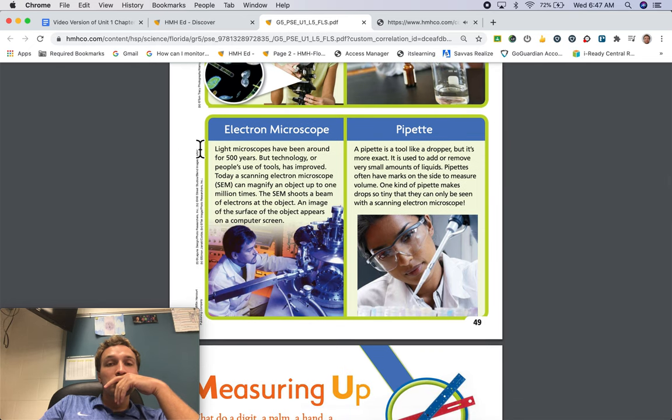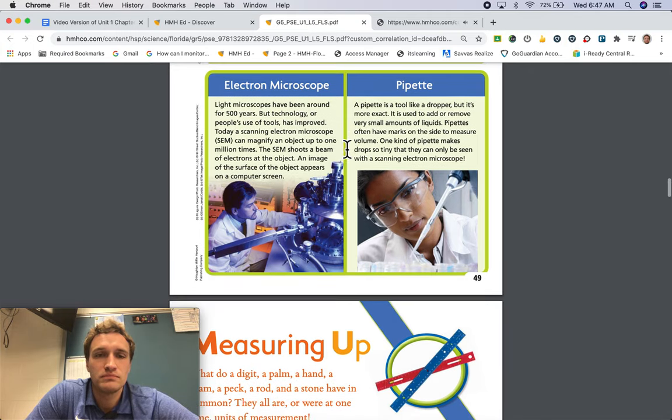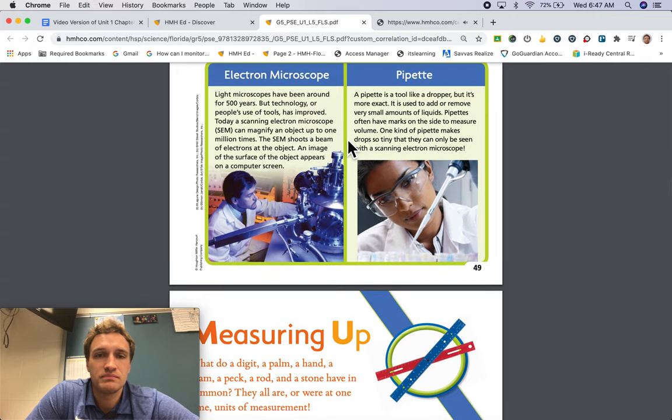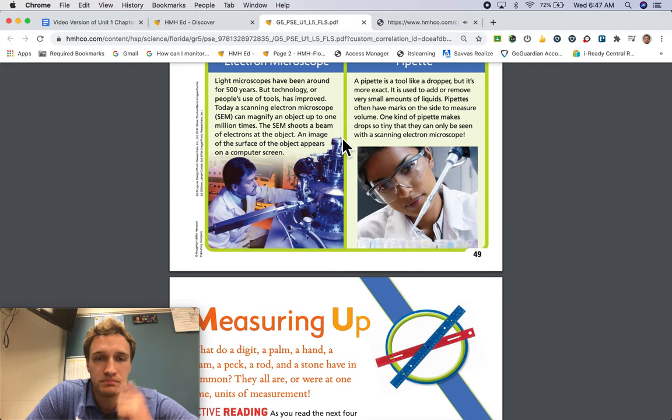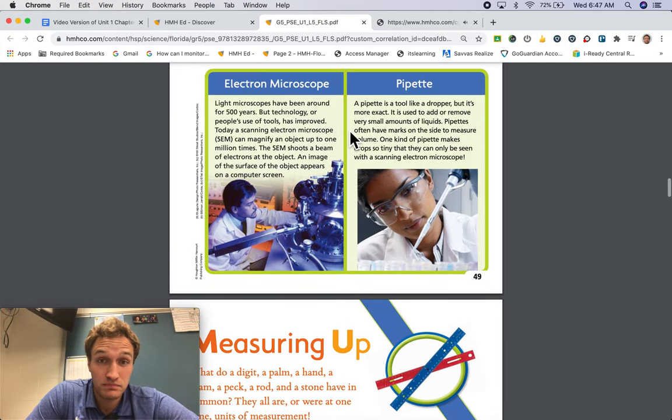Electron microscope. Light microscopes have been around for 500 years, but technology or people's use of tools has improved. Today, a scanning electron microscope, SEM, can magnify an object up to 1 million times. The SEM shoots a beam of electrons at the object. An image of the surface of the object appears on a computer screen.